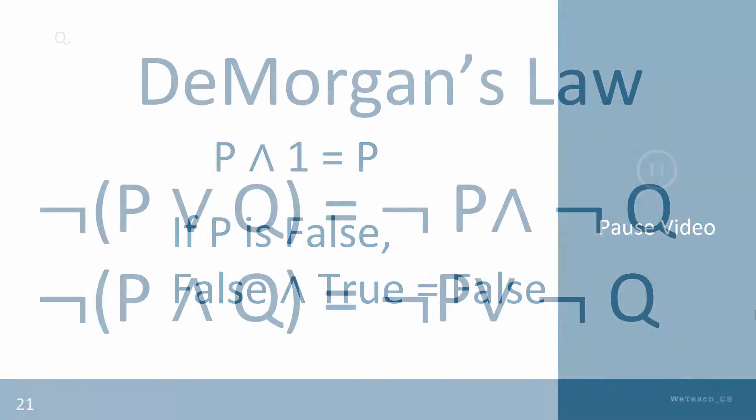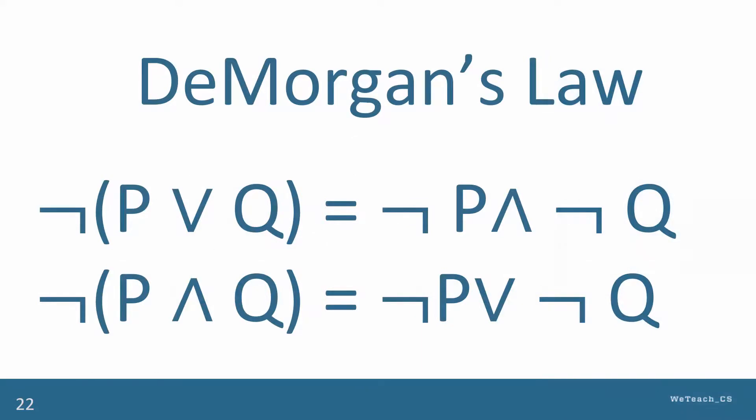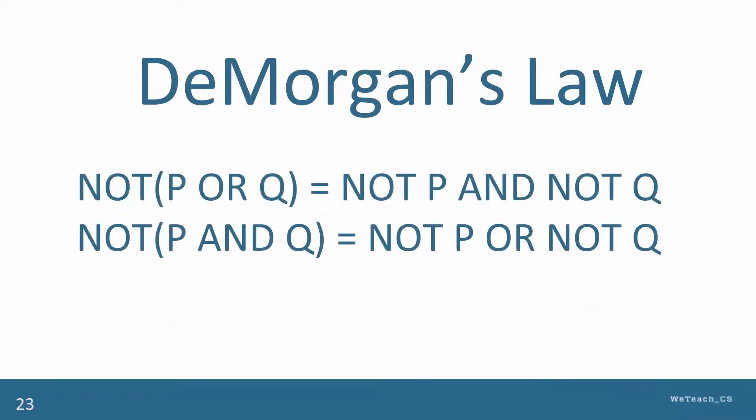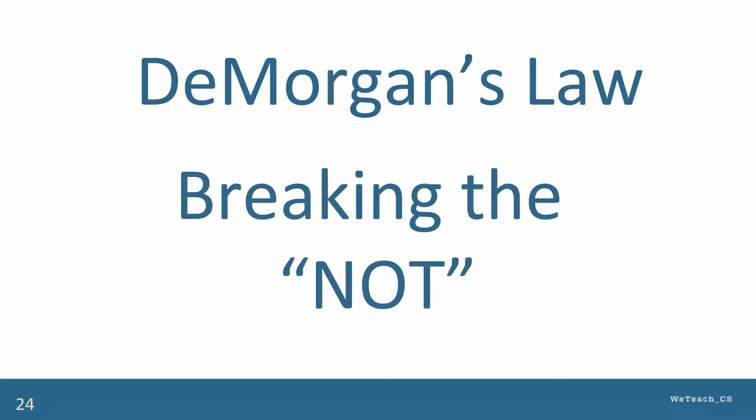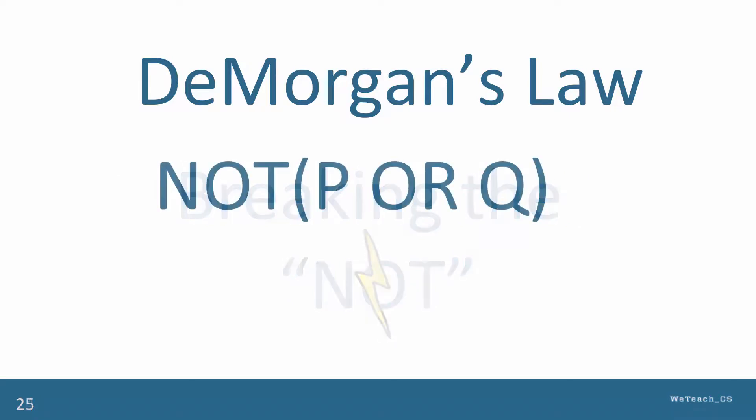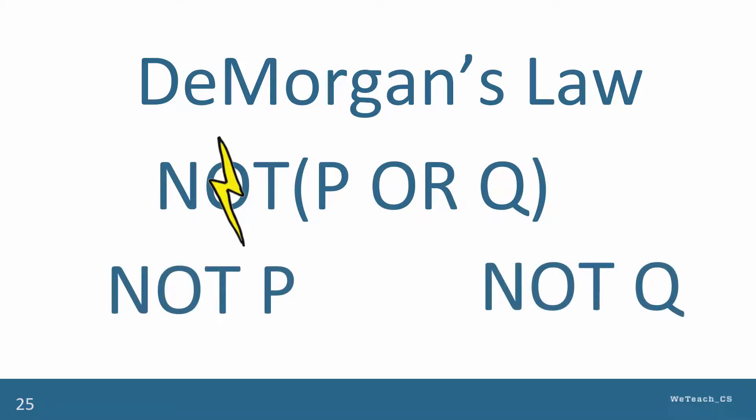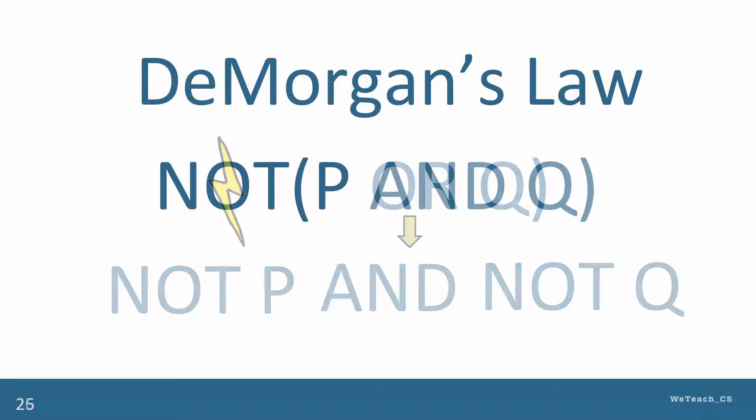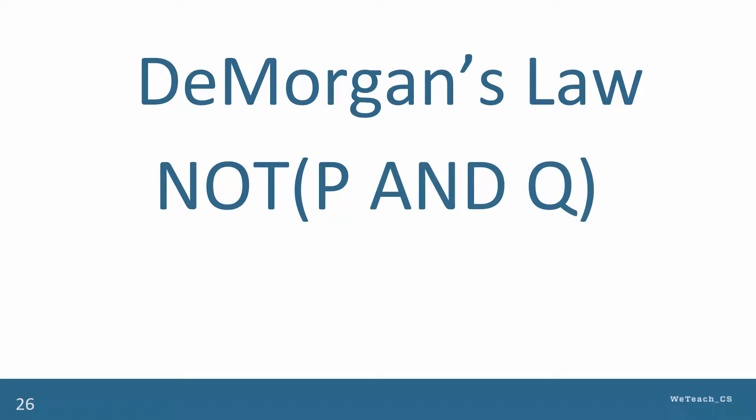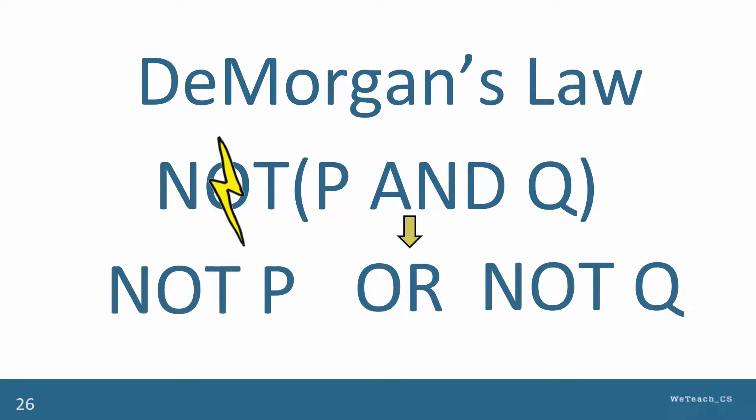De Morgan's Law deals with when an AND or OR operation is negated, sometimes called breaking the NOT. The basic rule is that when a NOT is applied to an OR operation, the NOT is broken, applied to each operand separately, and then the OR is changed to AND. The same happens when a NOT is applied to an AND. The NOT is broken, applied separately to each operand, and the AND is changed to OR.